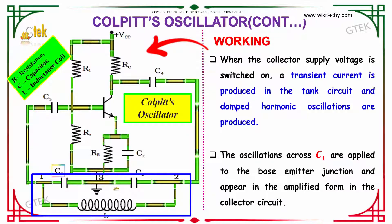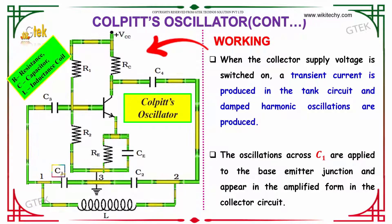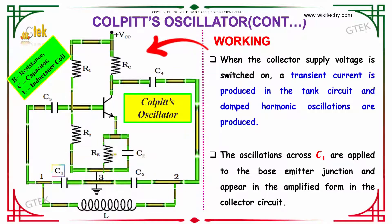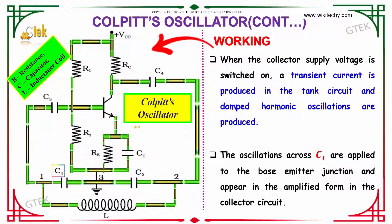The oscillations across C1 are applied to the base-emitter junction and appear in amplified form in the collector circuit.